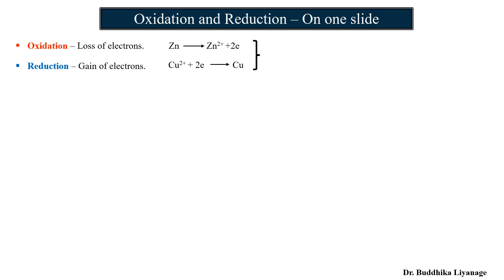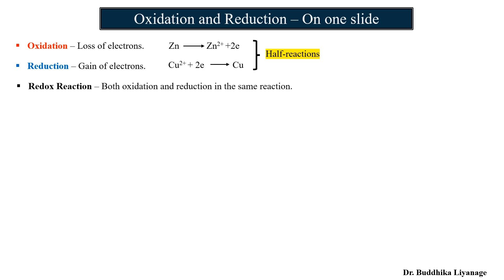These are called half reactions. If we add the half reactions together, it becomes an oxidation-reduction reaction, or simply a redox reaction. In the redox reaction, both oxidation and reduction occur within the same equation: zinc plus Cu²⁺ forms Zn²⁺ and copper. Zinc undergoes oxidation by losing electrons; Cu²⁺ undergoes reduction by gaining two electrons.